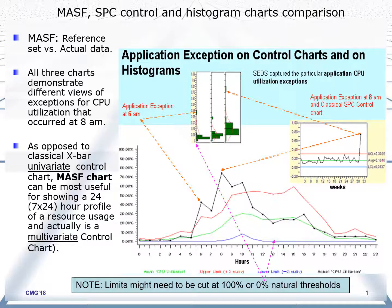We can look at this from a different point of view — just for this particular hour, but going back through history for 32 weeks, which means 32 Sundays. This chart shows the 8 a.m. data points for different Sundays. They fluctuate between about 5% and 30%, but last Sunday it jumped to about 75%.